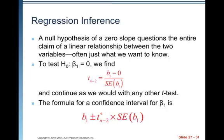and we're going to find T with N minus two degrees of freedom, B1 minus zero, because that's the hypothesized value for beta one. That's the hypothesized slope divided by the standard error of B1. And we continue as we would with any other T test.